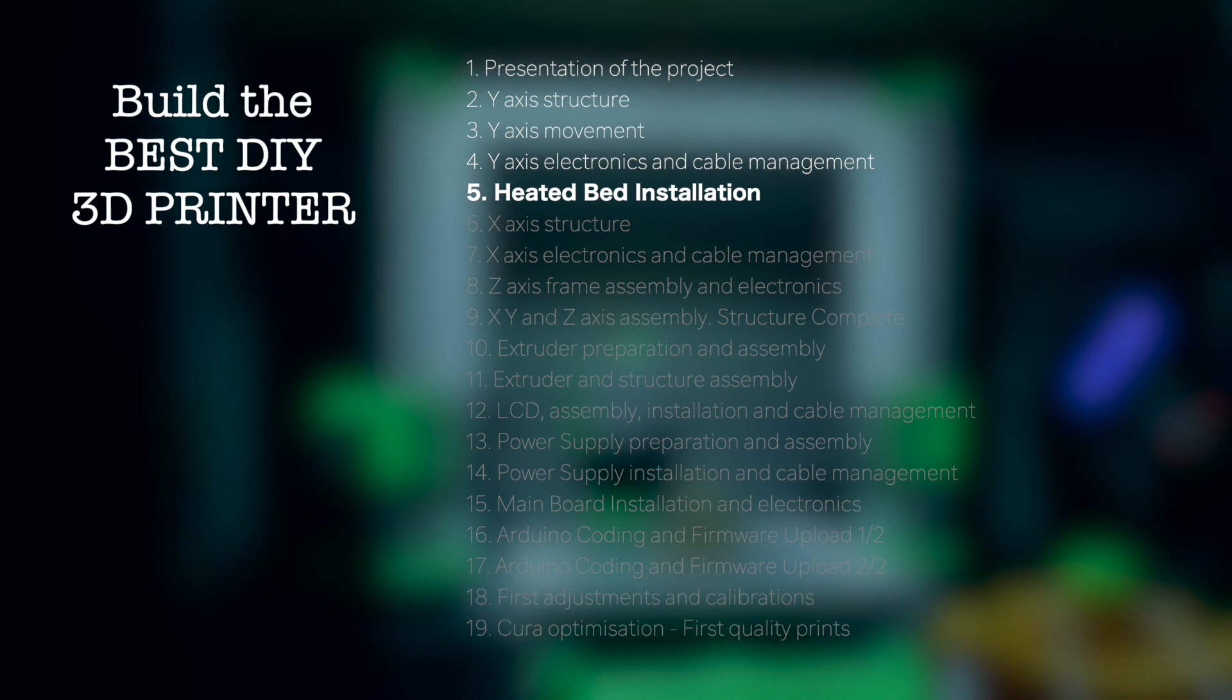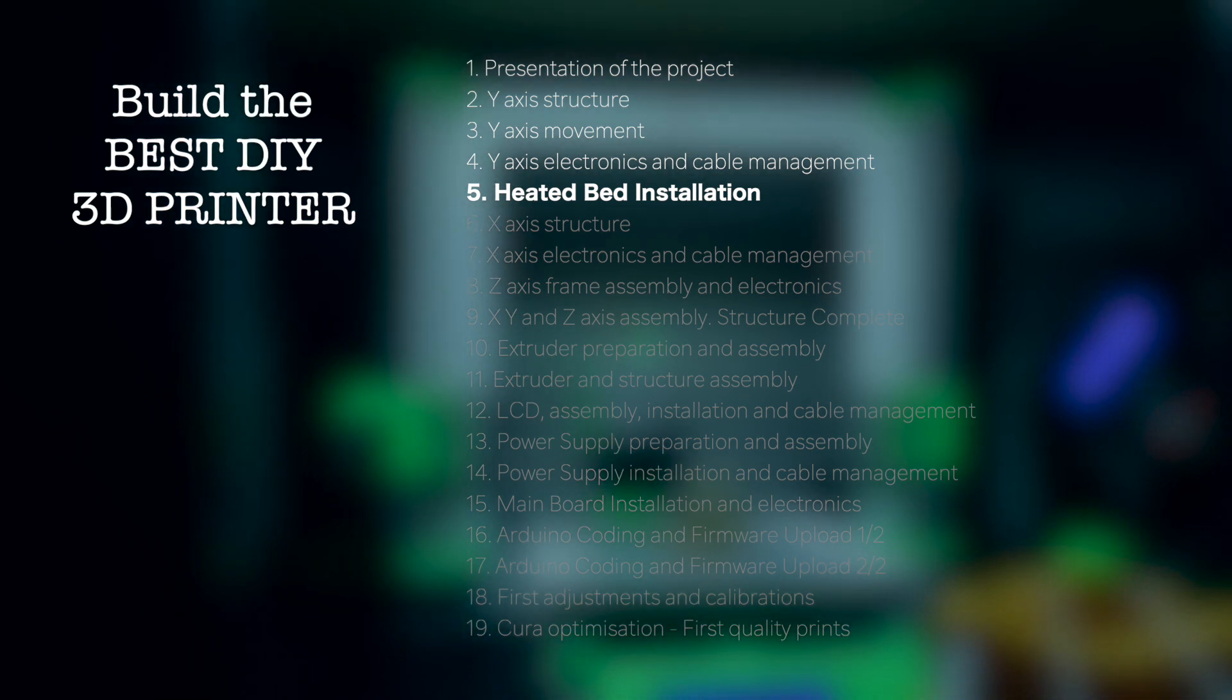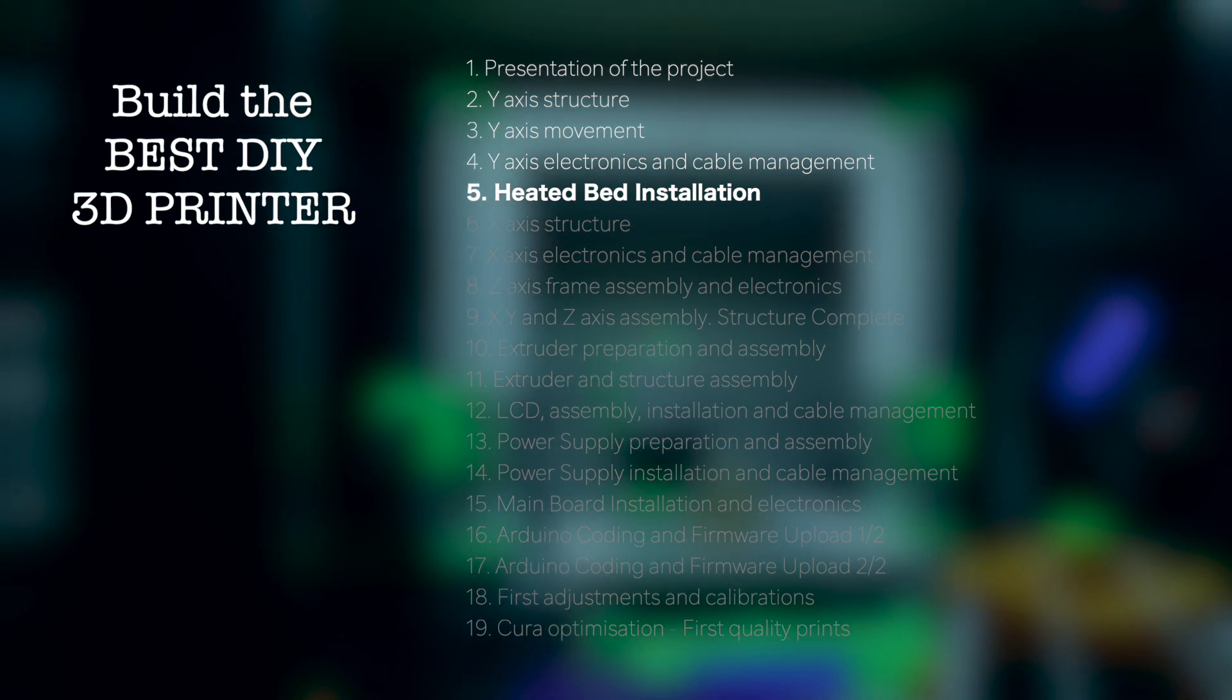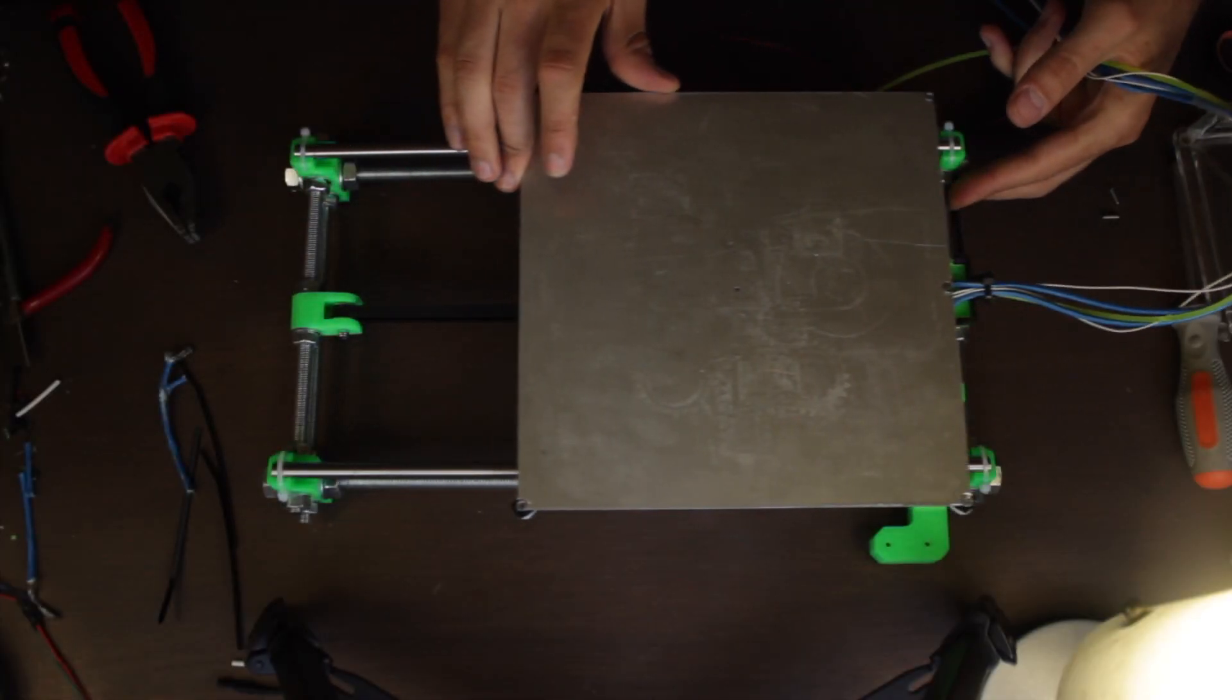Hello guys and welcome back to another video of Architects 3DP. In this fifth episode of the Build-A-Bets DIY 3D Printer series, I'm going to finish the build of the Y-axis by installing the heated bed and making the cable management. At the end of the video you will end up having this nice result.